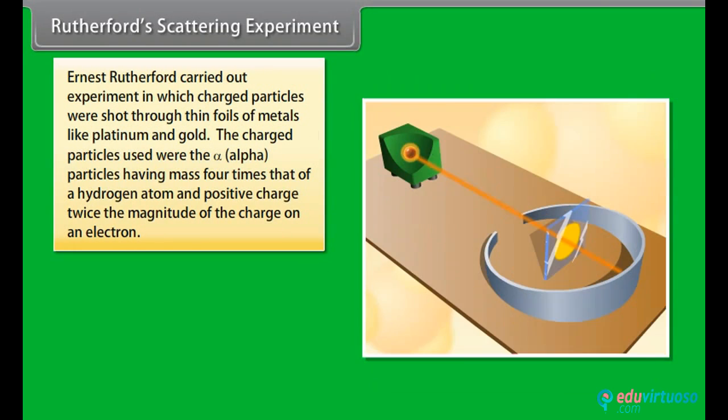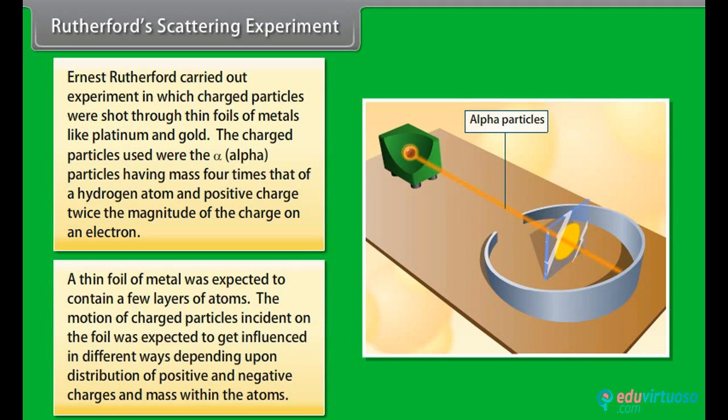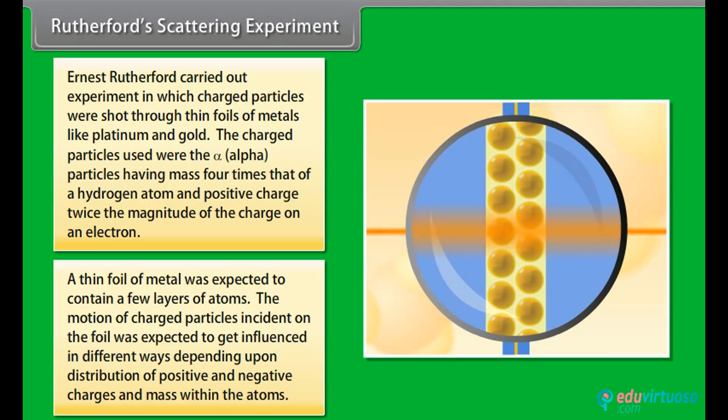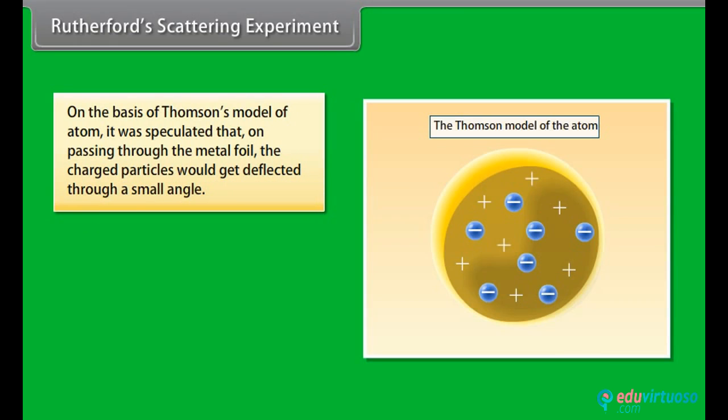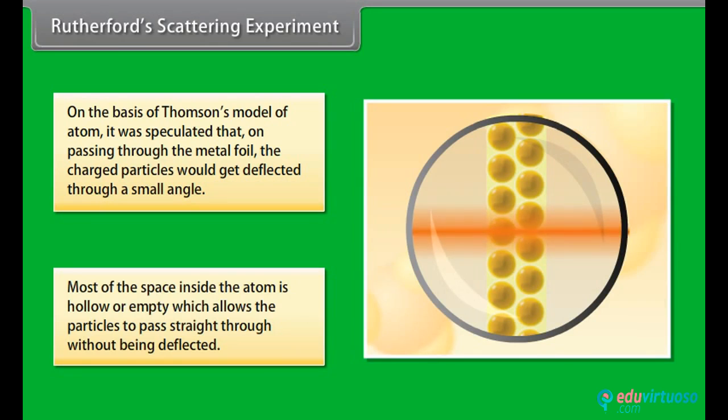Rutherford Scattering Experiment. Ernst Rutherford carried out experiment in which charged particles were shot through thin foils of metals like platinum and gold. The charged particles used were the alpha particles having mass four times that of a hydrogen atom and positive charge twice the magnitude of the charge of an electron. A thin foil of metal was expected to contain a few layers of atoms. The motion of charged particles incident on the foil was expected to get influenced in different ways depending upon distribution of positive and negative charges and mass within the atoms. On the basis of Thomson's model of atom, it was speculated that on passing through the metal foil, the charged particles would get deflected through a small angle. Most of the space inside the atom is hollow or empty, which allows the particles to pass straight through without being deflected.